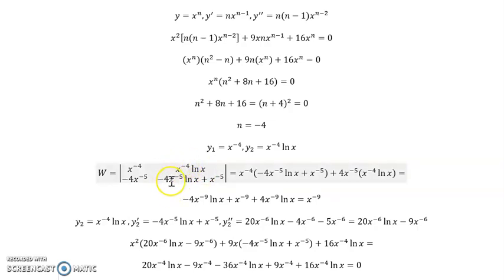To do this derivative of course we need the product rule. So we bring our negative 4 down, reduce the power by 1. And then x to the negative 4 times 1 over x is the same as multiplying by x to the negative 1, and so we obtain x to the negative 5.